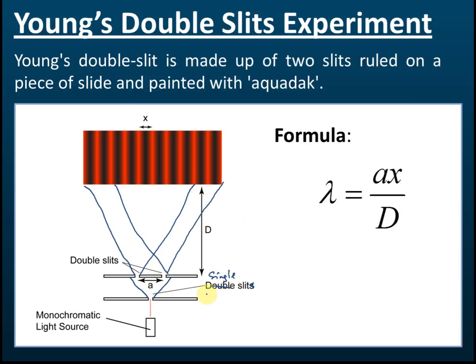So this is Young's double slit experiment, done by Young — a scientist. This experiment is a proof that light is a wave, because only waves can undergo interference. Other things cannot undergo interference. So this experiment shows that light can undergo interference, and therefore light must be a wave.